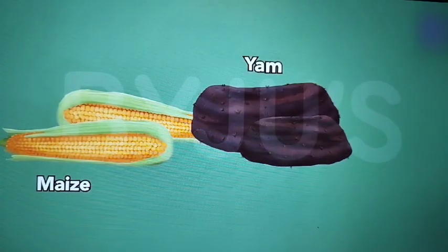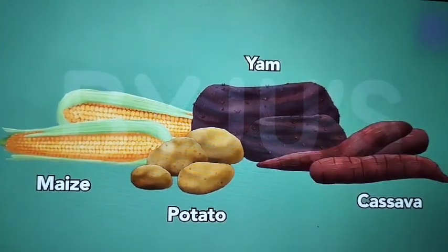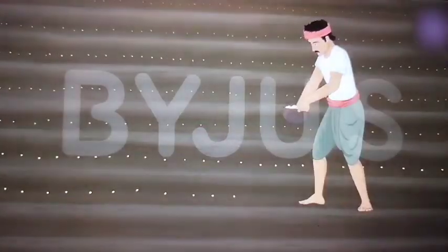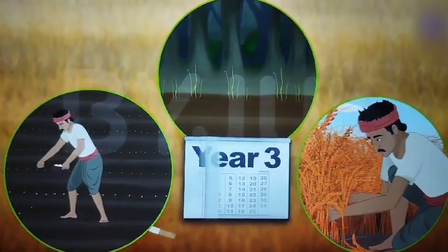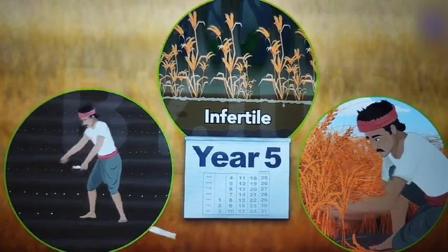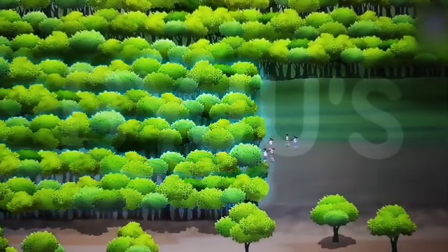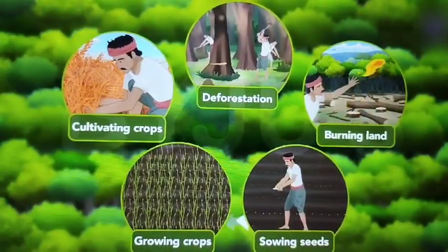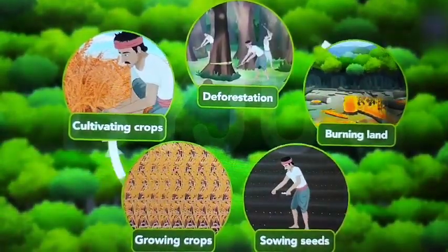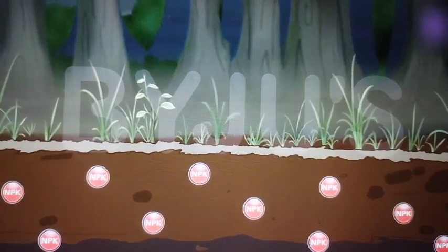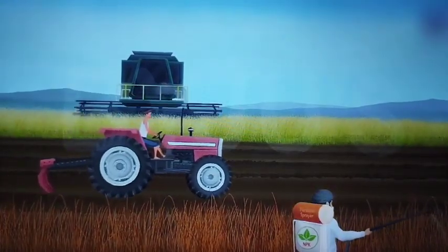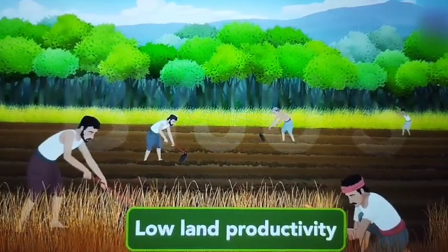Crops like maize, yam, potatoes and cassava are cultivated. Once the harvesting is done, the same patch of land is used again. This cycle goes on for a few years until the soil loses its fertility. Once that happens, that piece of land is abandoned and a new patch of land is identified and the whole process begins again. Meanwhile, the lost nutrients in the abandoned patch of land are replenished by natural processes. As fertilizers and modern inputs like tractors and harvesting machinery are not used, land productivity is low in primitive subsistence farming.